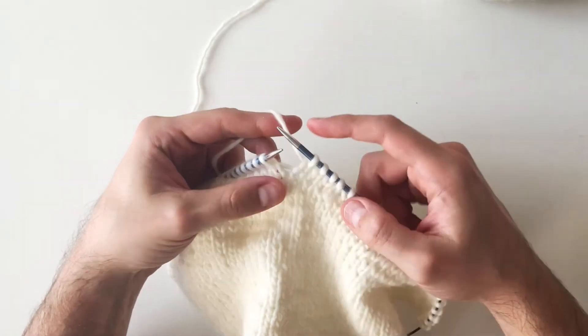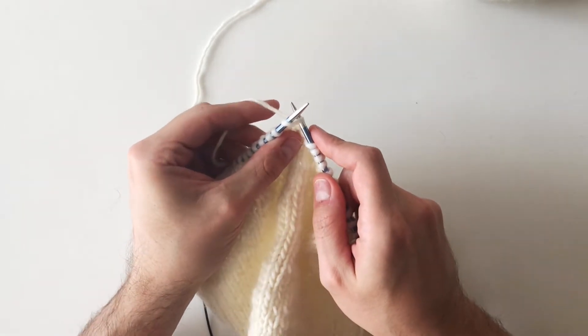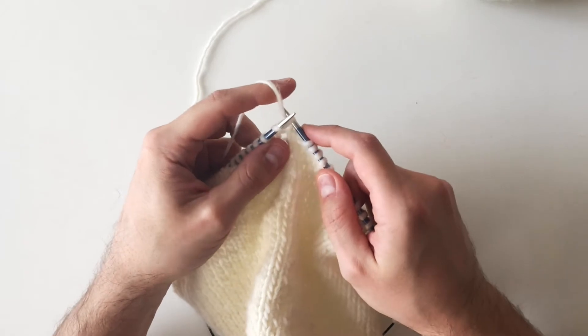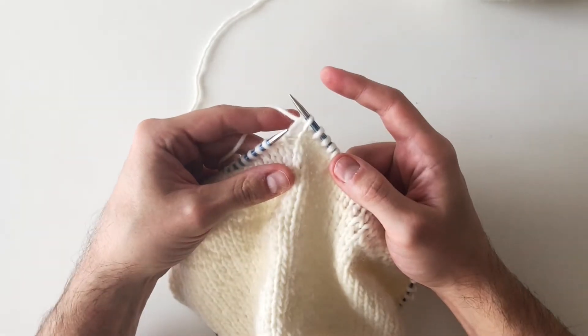What do I do when I have to knit? I insert my right needle into the stitch, I catch the working yarn, I bring it through the stitch, and then I drop the stitch. So again, I insert my right needle into the stitch, I catch my working yarn, I bring it through the stitch, and then I drop the stitch.